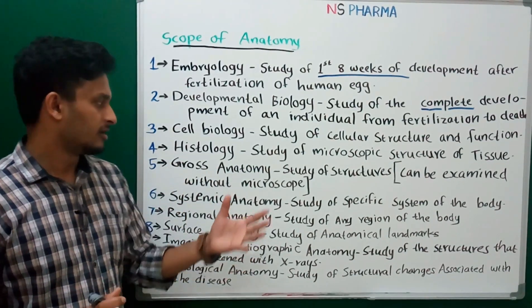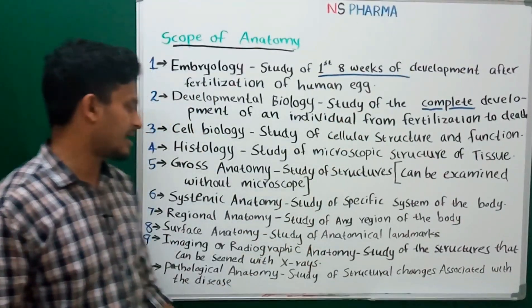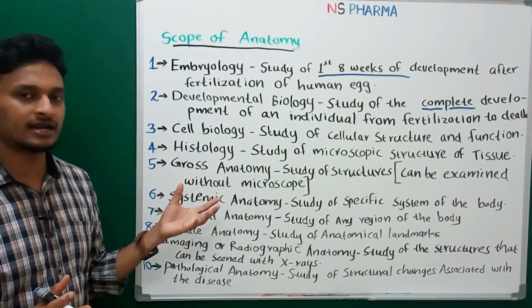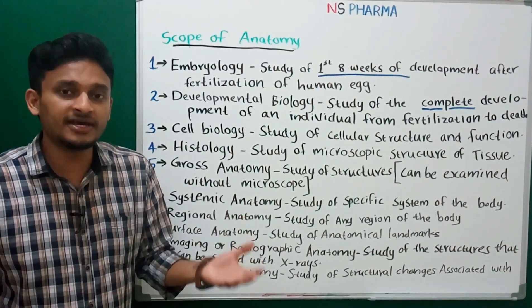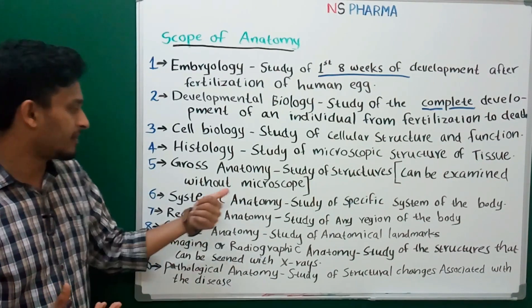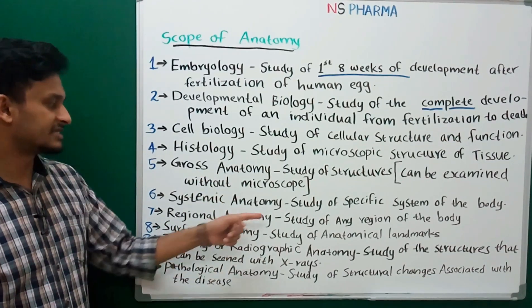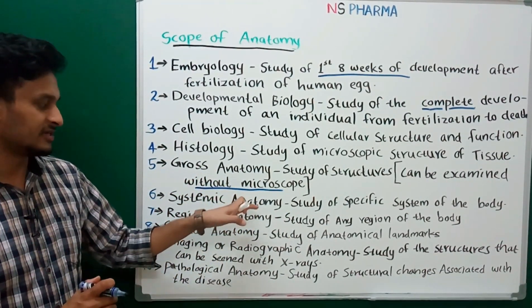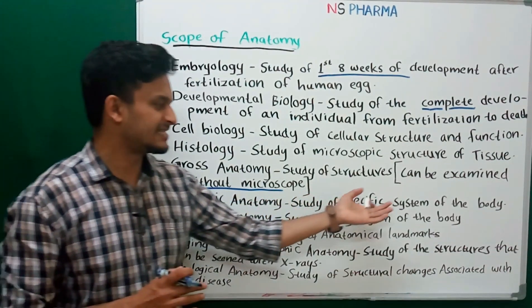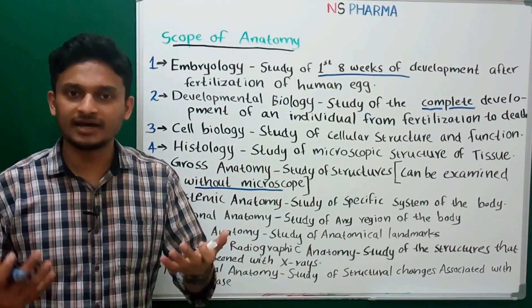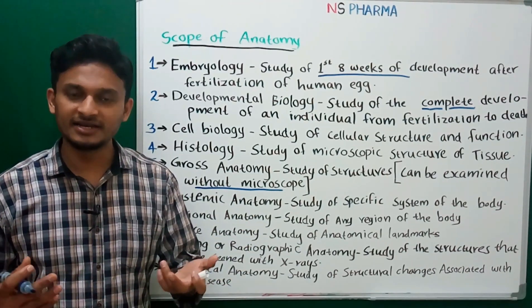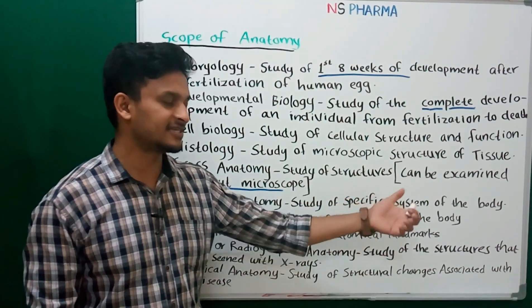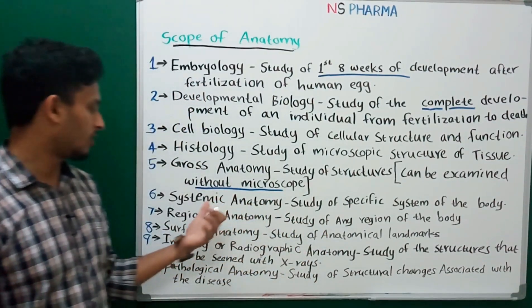The fifth is gross anatomy: it is the study of structures that can be examined without a microscope — no microscope is needed. The sixth is systemic anatomy: it is the study of a specific system of the body, such as the respiratory system, cardiovascular system, or nervous system.